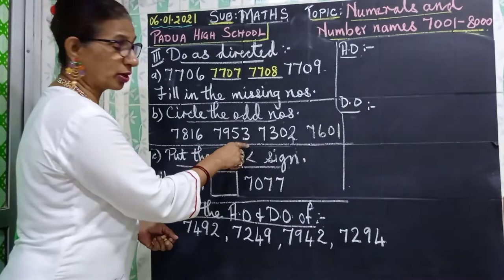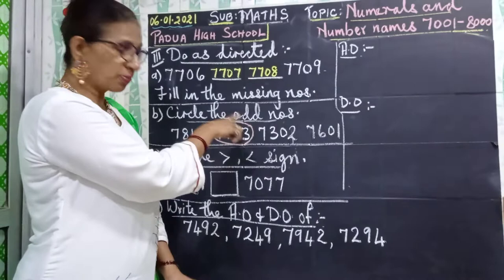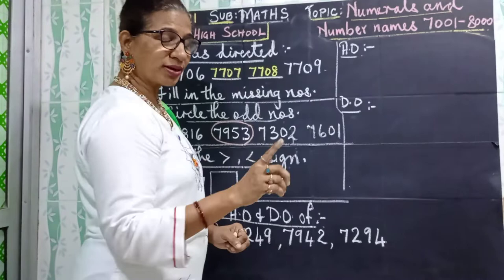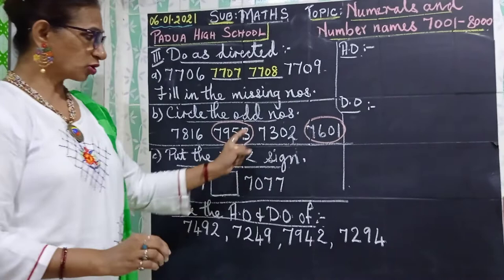It is not that only 3 is odd — the full number is an odd number. Now 7302 — this is an even number, so you will not circle it. Now here 7601 — 1 is odd, so this whole number is odd. Have you followed? So we circled it.